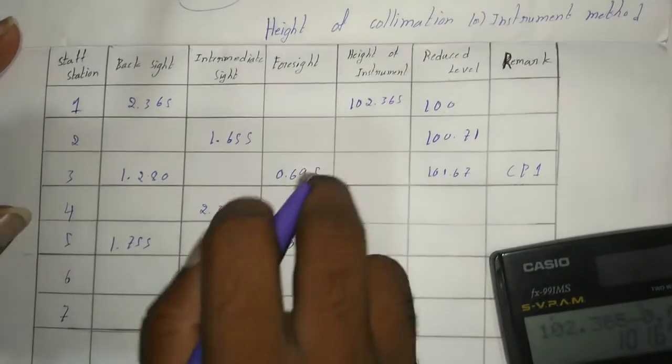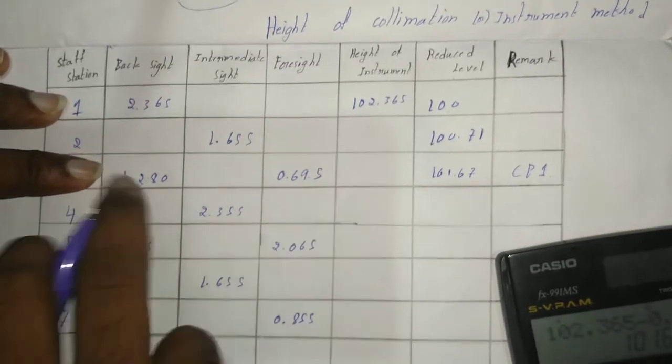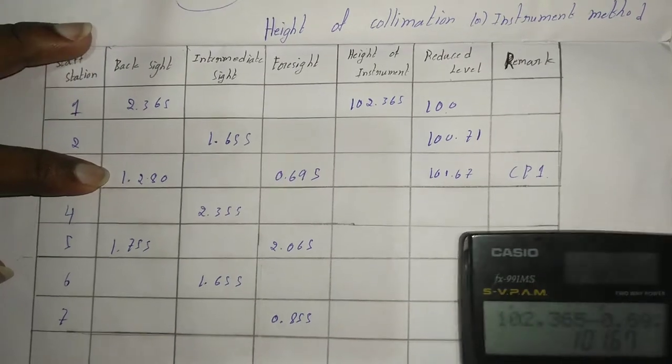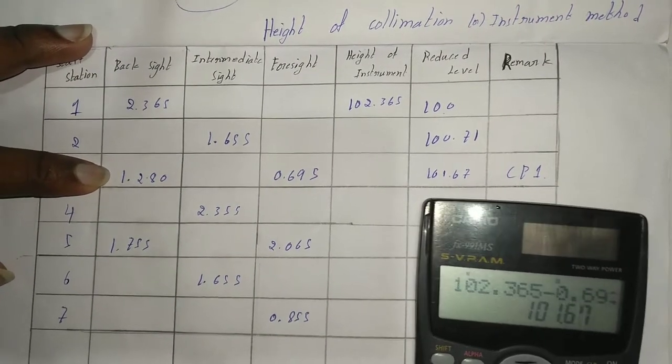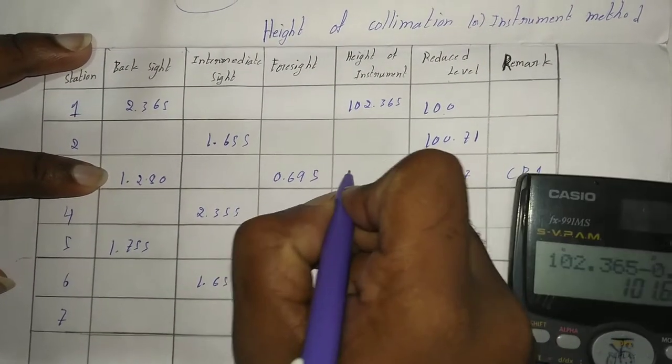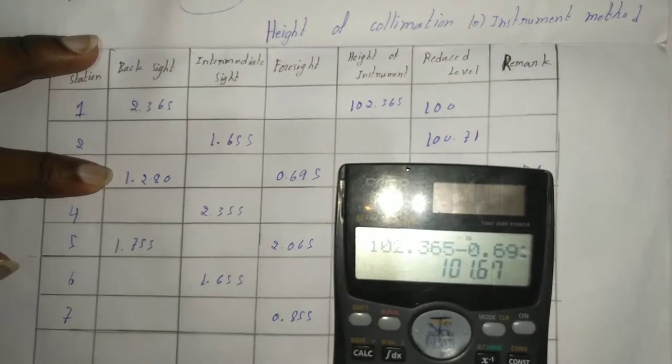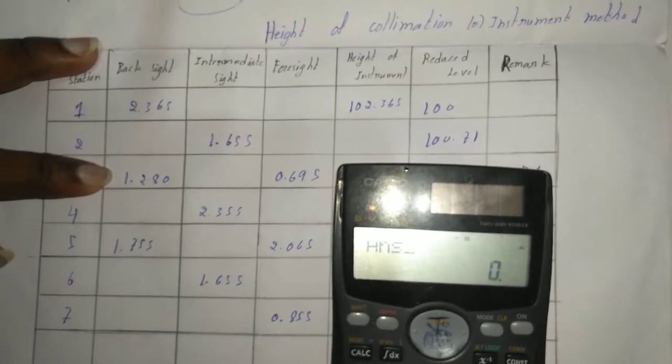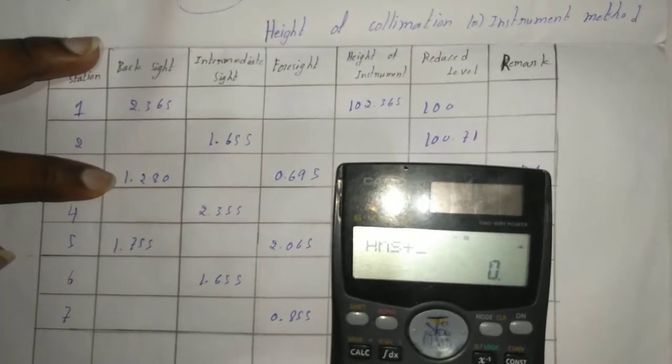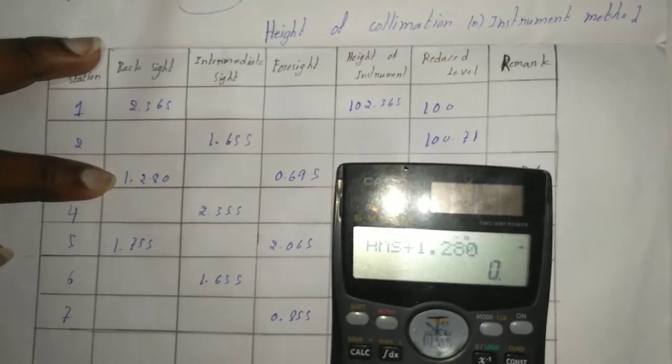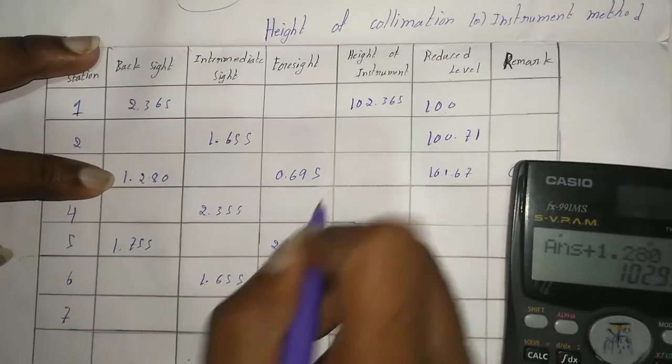Here it is the point is changed, the instrument is changed to another place. Again we have to find our HI, so it is our reduced level. Reduced level plus backsight equal to HI, so it is our HI.